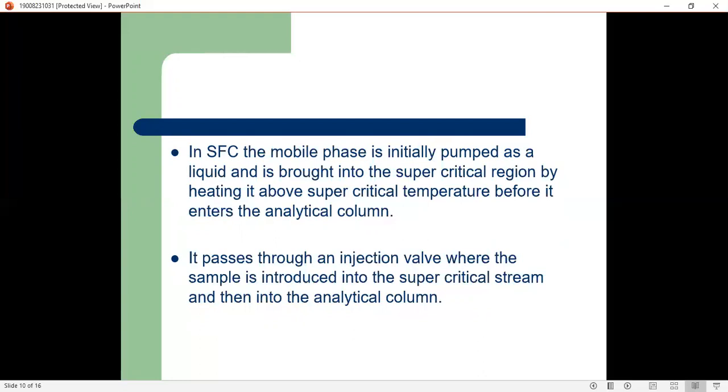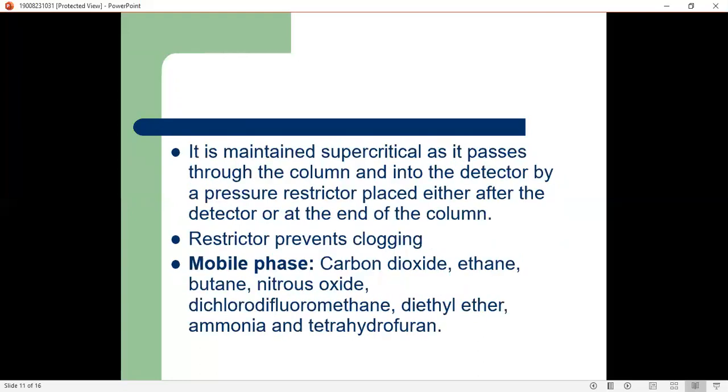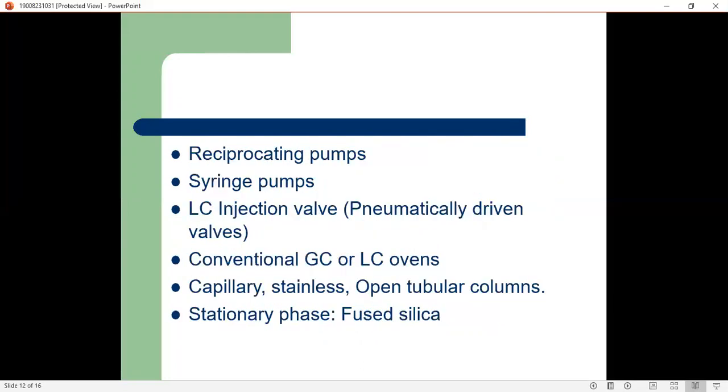The sample is introduced into the supercritical stream and then into the analytical column. It is maintained supercritical as it passes through the column and into the detector by a pressure restrictor placed either after the detector or at the end of the column. The restrictor prevents clogging. The mobile phase includes carbon dioxide, ethane, butane, nitrous oxide, dichlorodifluoromethane, diethyl ether, ammonia, and tetrahydrofuran.